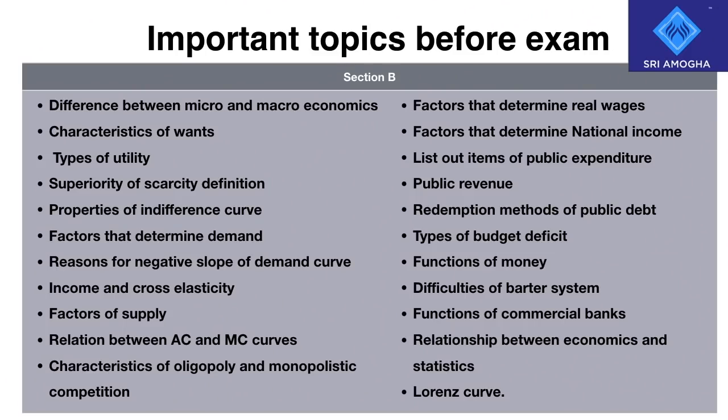For Section B, important topics to be covered: difference between micro and macroeconomics, characteristics of wants, types of utility, superiority of scarcity definition, properties of indifference curve, factors that determine demand, reasons for negative slope of demand curve, income and cross elasticity, and factors of supply.